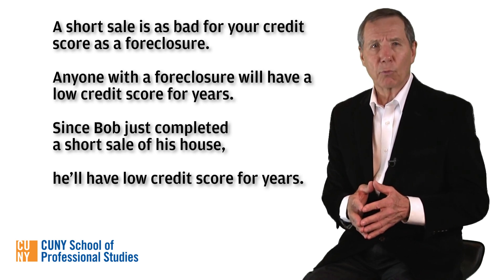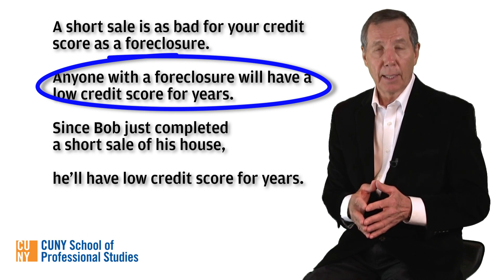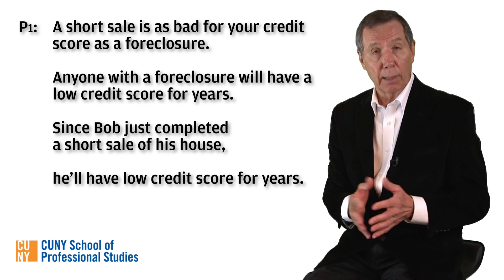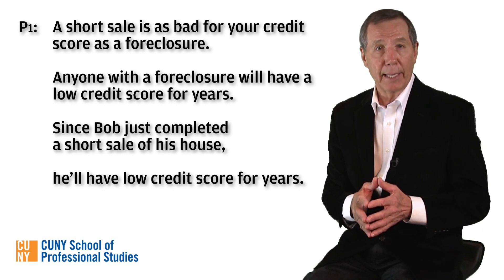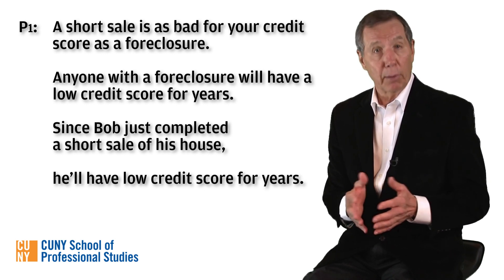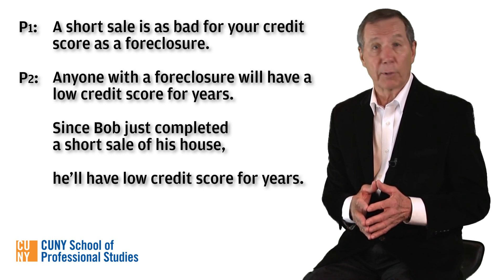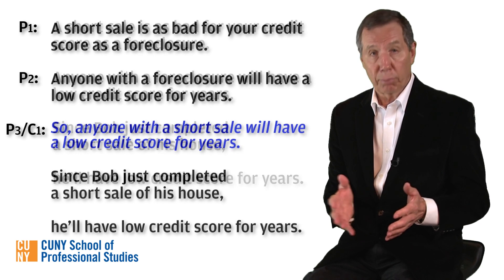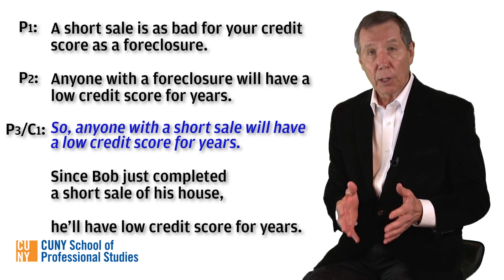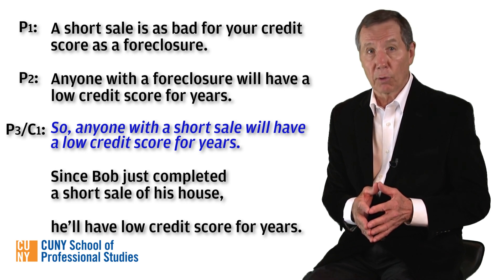Notice that at least one statement is both a premise and a conclusion. Here's the extended argument reconstructed. Premise one: a short sale is as bad for your credit score as a foreclosure. Premise two: anyone with a foreclosure will have a low credit score for years. Unstated premise three, also functioning as a sub-conclusion: anyone with a short sale will have a low credit score for years.